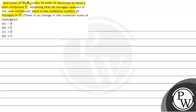We have the compound N2H4, commonly known as hydrazine. It loses 10 electrons and forms a new compound denoted by Y. Since 2 nitrogen atoms are present in hydrazine, 2 nitrogen atoms are also present in Y. The key thing to note is that there is no change in the oxidation state of hydrogen.